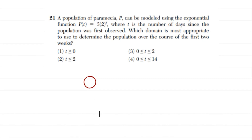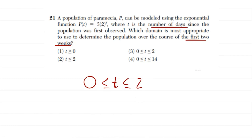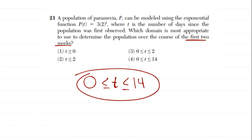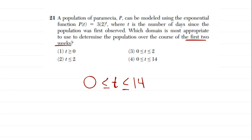So time starts at zero — that's our initial point for the domain. The ending point: if we're finding the population over the first two weeks, it's tempting to say zero to two, but you have to remember your units — t is given in days. Two weeks equals 14 days, so the most appropriate domain is 0 to 14.